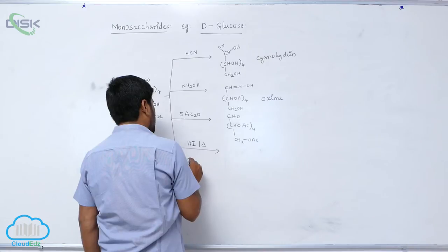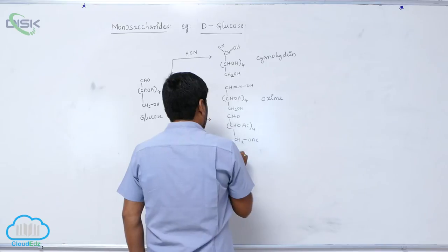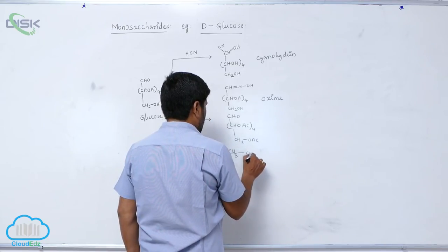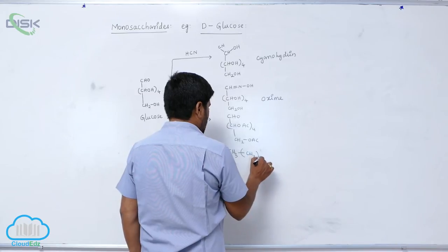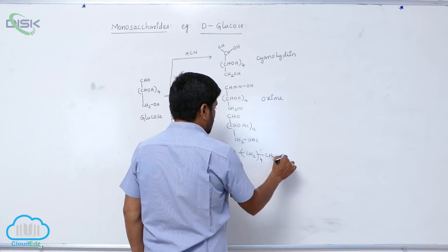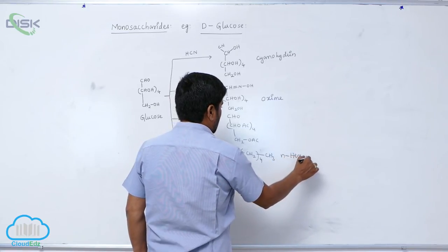presence of red phosphorus. It forms n-hexane: here is four moles then CH3. This is known as n-hexane.